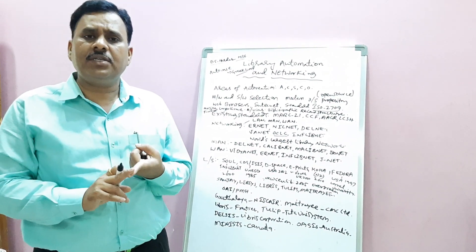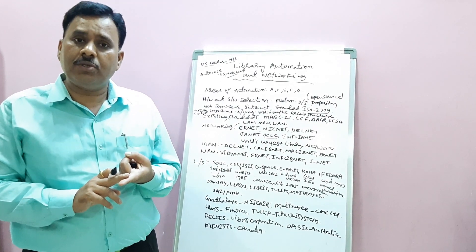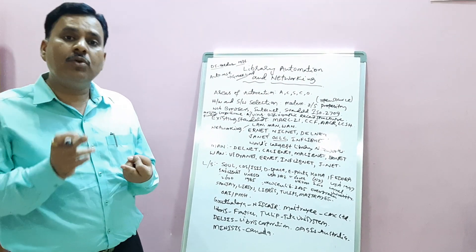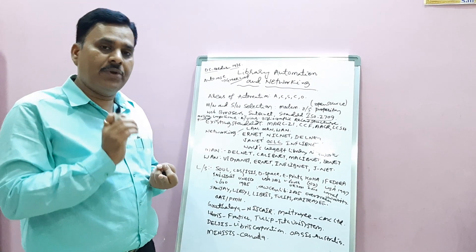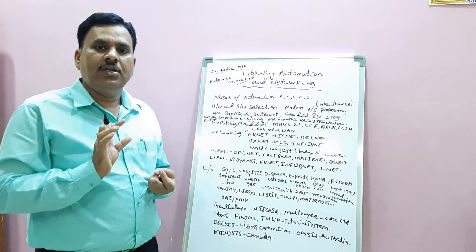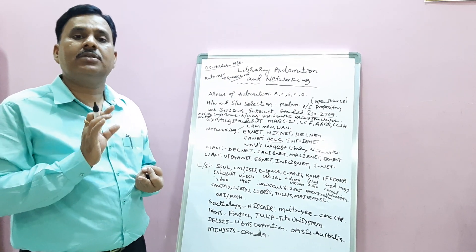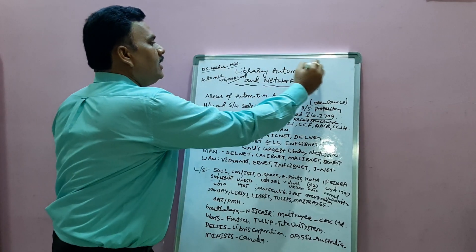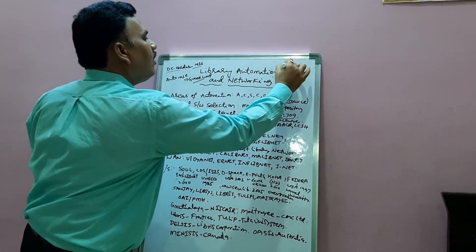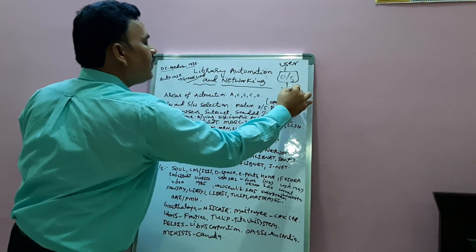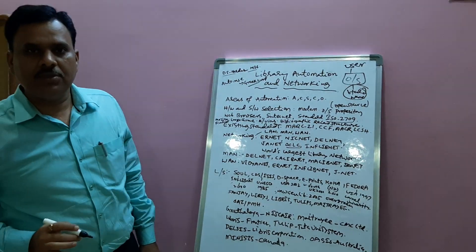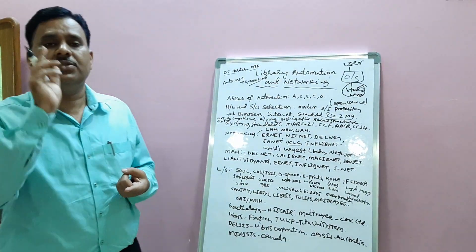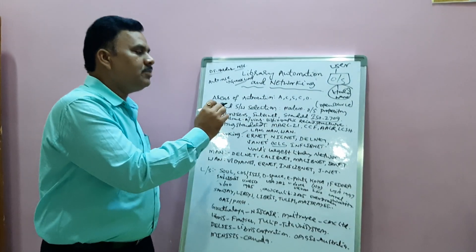Computers are essential, and scanners are very important to scan physical documents into electronic format. For software, an operating system is very essential — DOS, Unix, and Linux operating systems are used. The operating system is an interface between the user and the hardware. Selection of software is very important in library automation. Windows, Unix, and Linux are the main operating systems used.